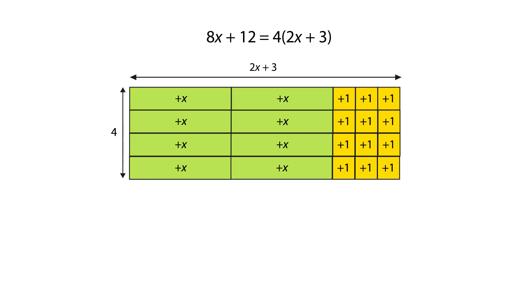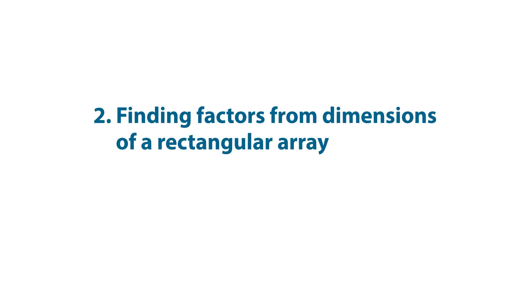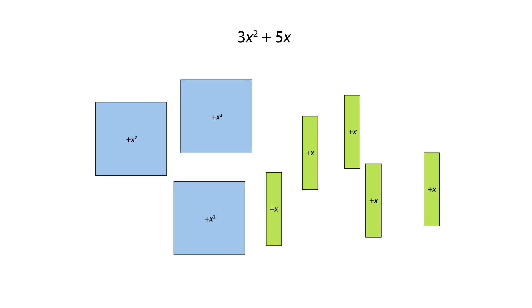Now let's find the factors for some other expressions. The expression 3x squared plus 5x involves x squared and x terms. It's not possible to arrange these tiles into equal groups as there isn't a common numerical factor.